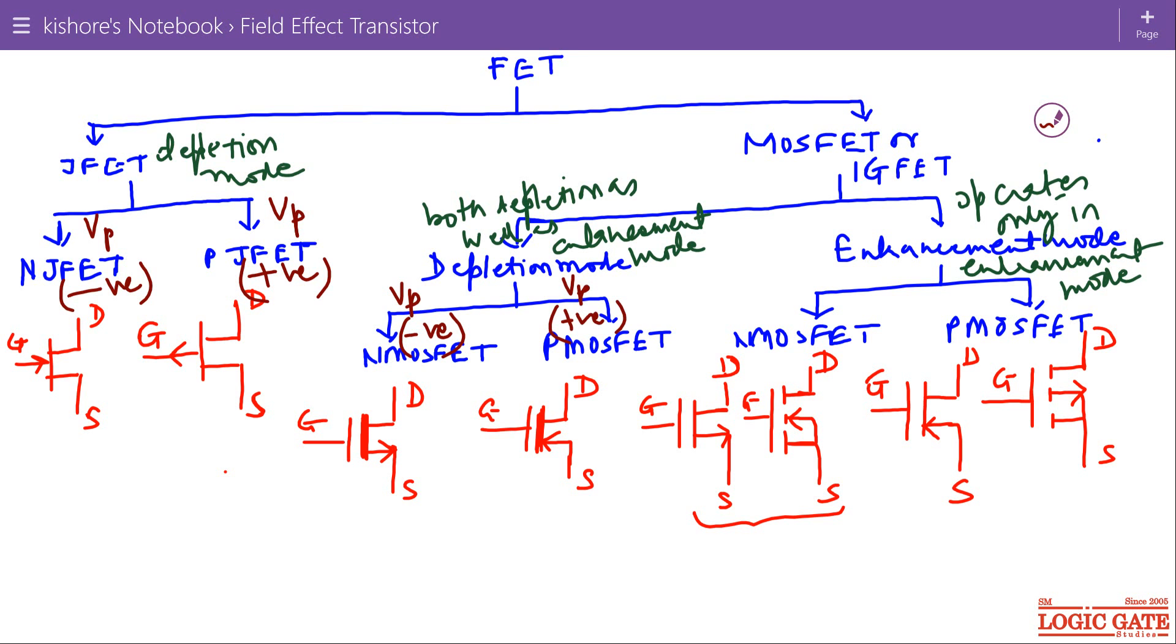And in case of enhancement mode MOSFET, we use threshold voltage. And for N MOSFET, enhancement mode MOSFET, threshold voltage for N MOSFET is positive. And threshold voltage for P MOSFET is negative.